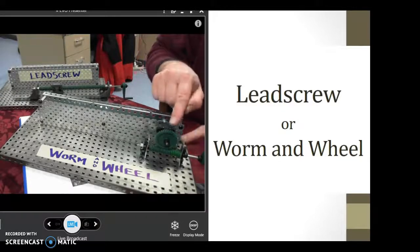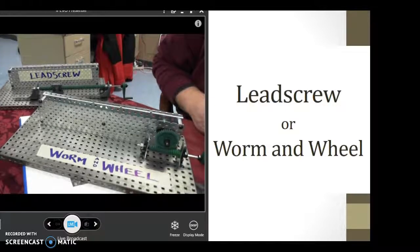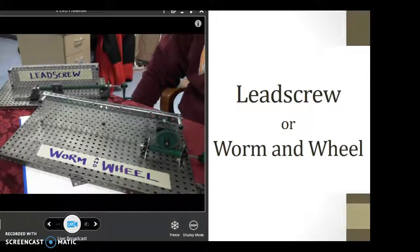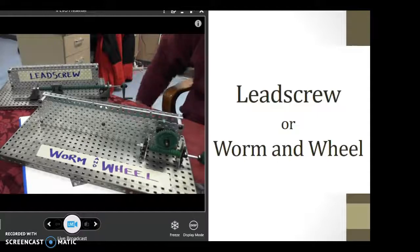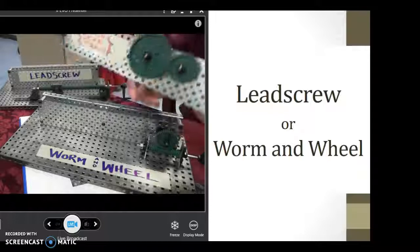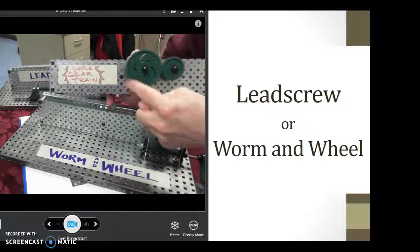The other thing you can notice is that I can't turn the wheel to get the other mechanism to move. The power only flows in one way. If we have a simple gear train, which I have right here, you may notice that I can turn any of these gears and the whole mechanism moves.